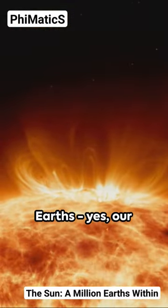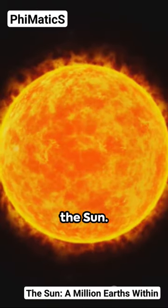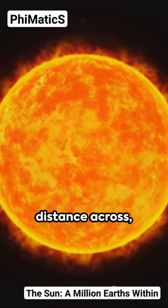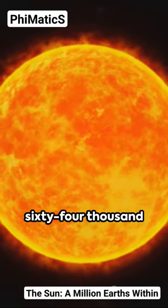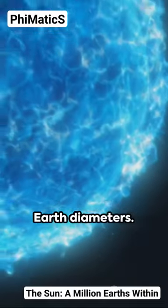Picture 1 million Earths. Yes, our entire planet, fitting snugly inside the Sun. When it comes to distance across, we're talking about 864,400 miles. That's roughly 109 Earth diameters.